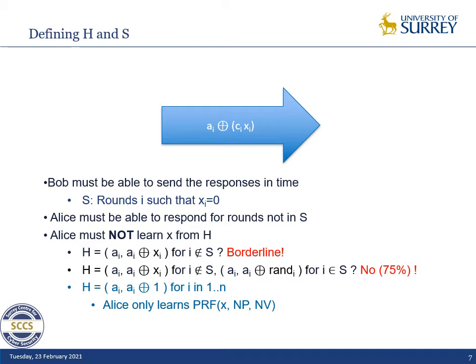The first choice would be to give both correct responses to Alice for the rounds not in S — the rounds where she will be in charge of responding — and nothing for the rest. We classify this strategy as borderline, and the interesting question that pops up is: does Alice know the strategy? If she knows the strategy, then by simply observing what she has, she knows that the key bit for rounds not in S must be 1.